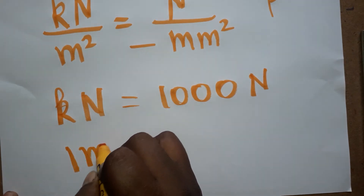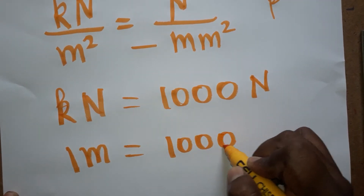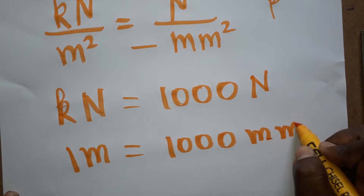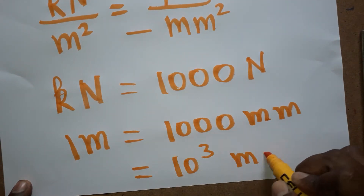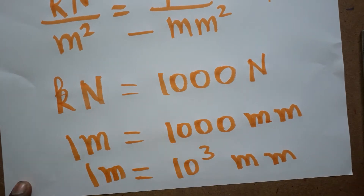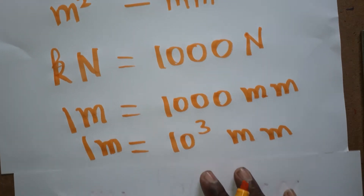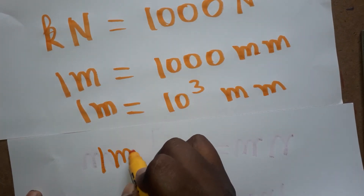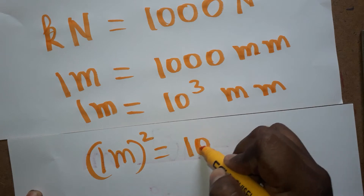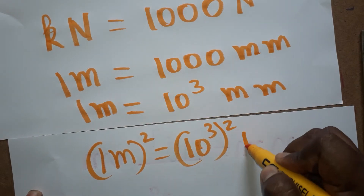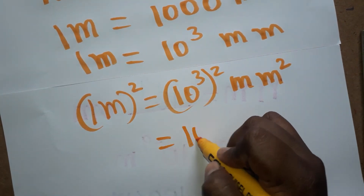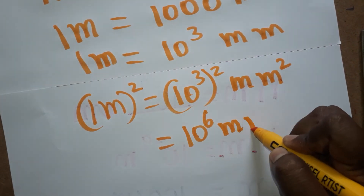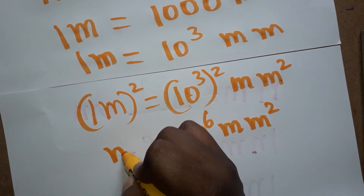One meter is equal to one thousand millimeters, which we can write as 10 power 3 millimeters. So 1 meter square is equal to 10 power 3, whole squared, millimeter square. That gives us 10 power 6 millimeter square. So 1 meter square equals 10 power 6 millimeter square.